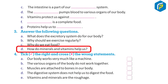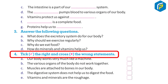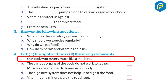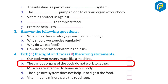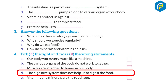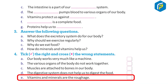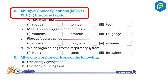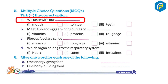Answer questions such as: What does the excretory system do? Why should we exercise regularly? Why do we eat food? How do minerals and vitamins help us? Also, identify true and false statements: Our body works like a machine; organs work together; muscles are attached to bones; the digestive system helps digest food; vitamins and minerals are roughage.